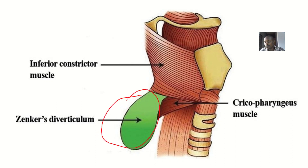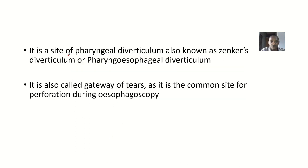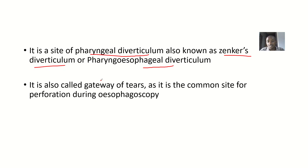Because it is a soft, open area, it can form a diverticulum. When a diverticulum forms here, it is called Zenker's diverticulum, also known as pharyngeal esophageal diverticulum. So Killian's dehiscence is the site of pharyngeal diverticulum, also known as Zenker's diverticulum.